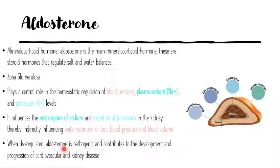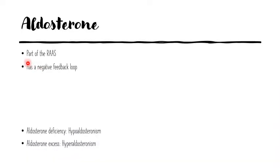Naturally, dysregulation of aldosterone will be pathogenic and will contribute to the development of cardiovascular and kidney diseases. It is also an integral part of the renin-angiotensin-aldosterone system, which you should remember from physiology. And like most other hormones, it has a negative feedback loop.